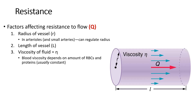The second factor is the length of the vessel, represented by large L. The length is simply how far the blood has to travel. As you would imagine, the further the blood has to go, the more resistance or impedance — the harder it is for blood to flow. Think about the femoral artery versus the pulmonary artery: the pulmonary artery is very short, while the femoral artery is very long. The longer the vessel, the more resistance to flow; the shorter the vessel, the less resistance.